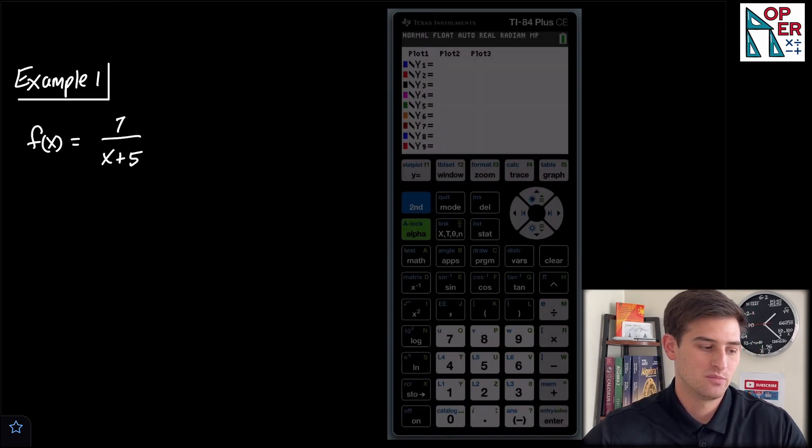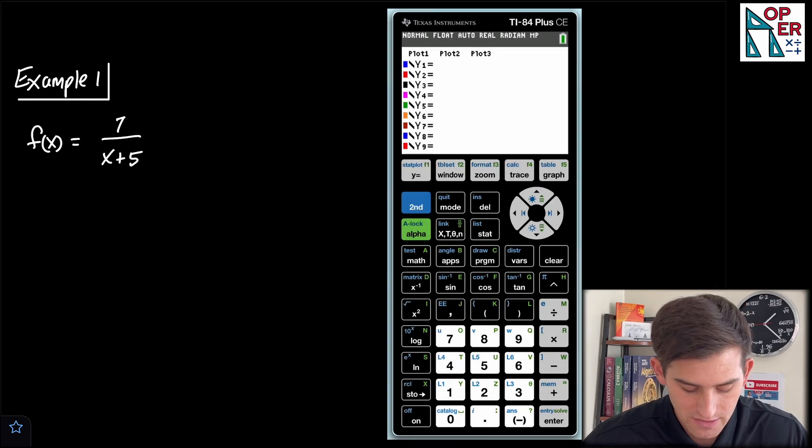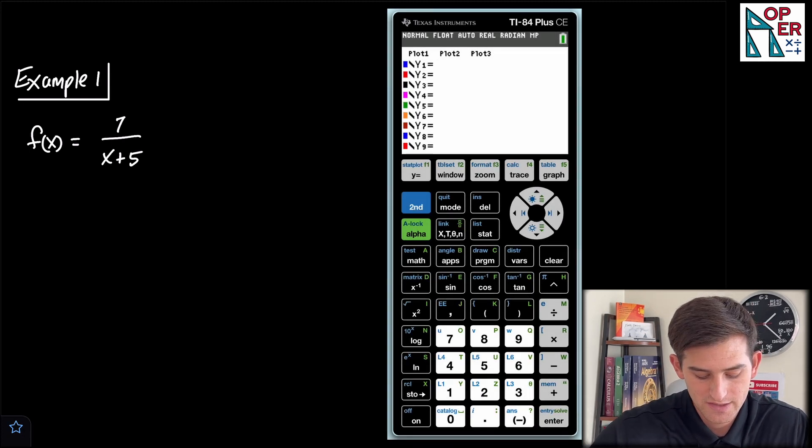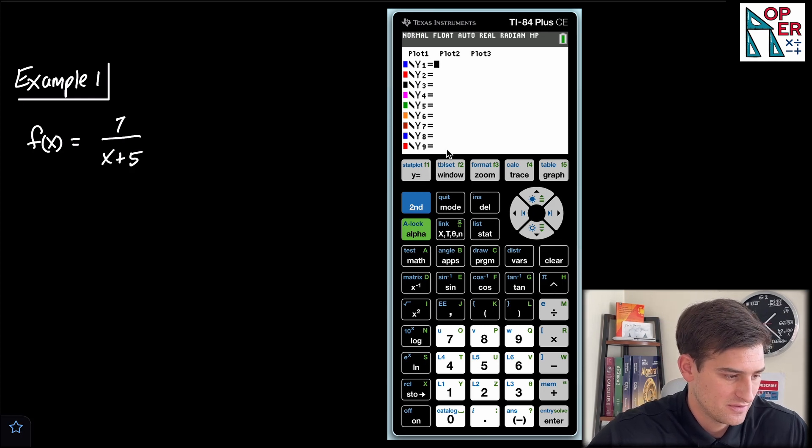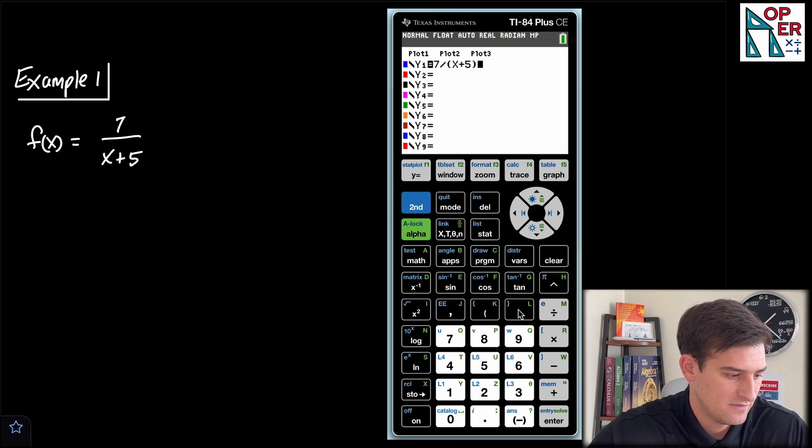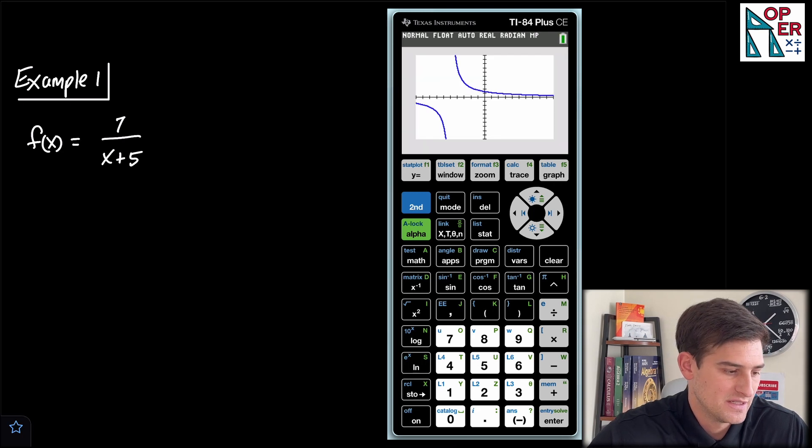First of all, I'm going to bring my TI-84 plus CE graphing calculator on the screen, and we're going to go ahead and graph f(x) equals 7 over x plus 5. I'm going to go into Y equals, and we're going to graph 7 divided by, and I'm going to put x plus 5 in parentheses. Now let's graph and see what we get.